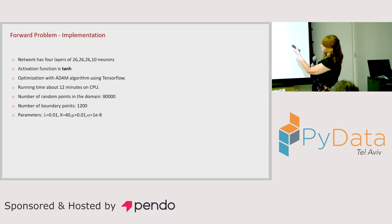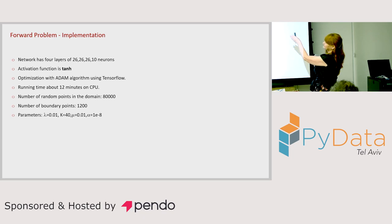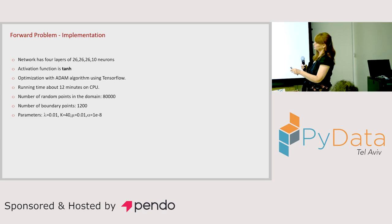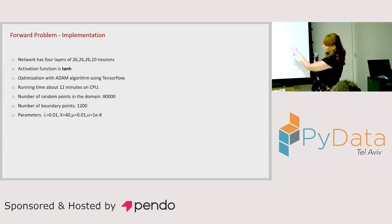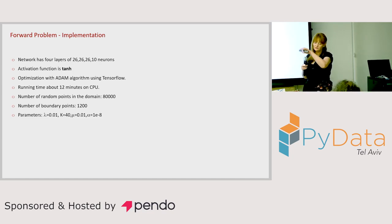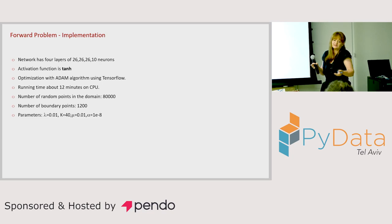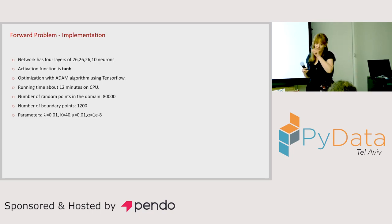To summarize this part: we used a very simple network with four layers and 26 neurons, using hyperbolic tangent activation, trained with TensorFlow and Adam optimizer, running in about 12 minutes. We used 8,000 randomly sampled points inside the domain and 1,000 boundary points. Since the approach is unsupervised, we can sample freely — we just randomly sample inside the domain.